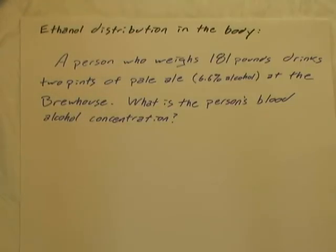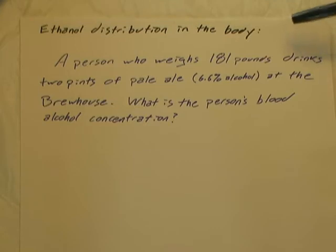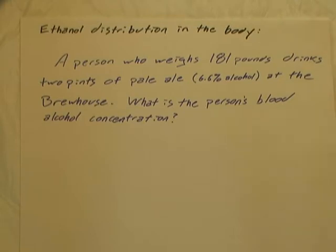Let's work on a quick problem about ethanol distribution in a body. Consider a person who weighs 180 pounds who drinks two pints of pale ale with a 6.6% alcohol content at the brew house. We want to know what the person's blood alcohol concentration is after that drinking episode. We can assume that the alcohol is completely resorbed and that no metabolism has taken place yet.